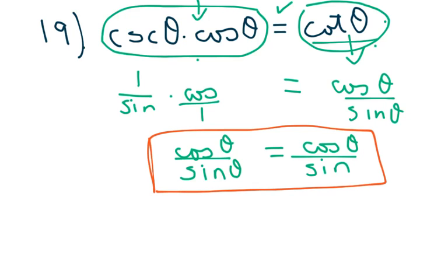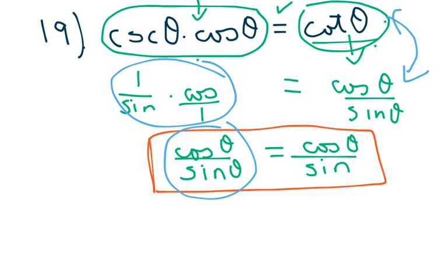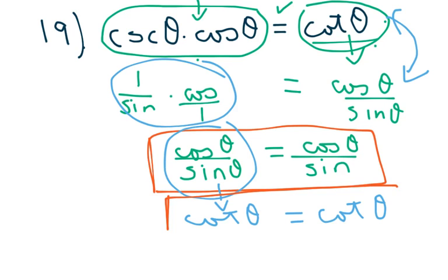You didn't have to do every step. If you already knew what the expression equals, once you reached that point you could have written cotangent theta equals cotangent theta directly. Both of these are valid ways to establish an identity. That was an easy one — you will have one easy one on your quiz.